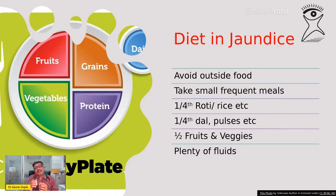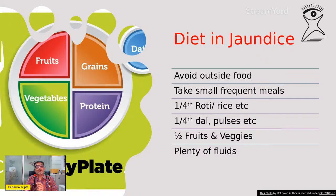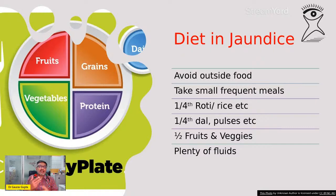The interesting thing is that getting back the appetite is one of the first signs of recovery in a child with jaundice. Agar bachche ko bhookh lagni shuru ho, agar bachche ki activity badhni shuru hui, most likely aapka bachcha better ho raha hai. And viral hepatitis can take around one to two weeks.